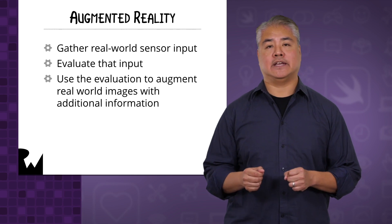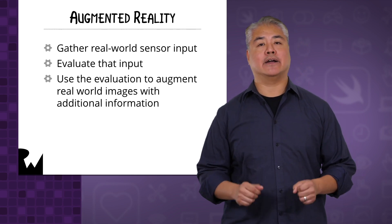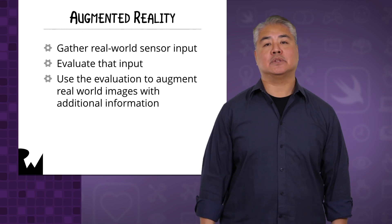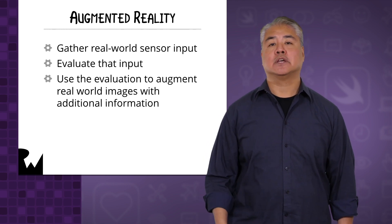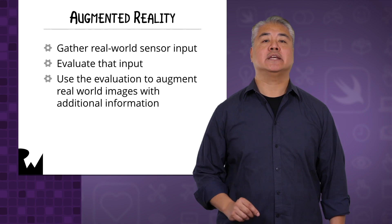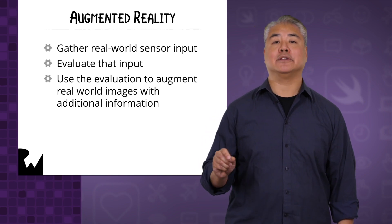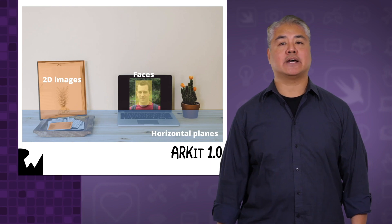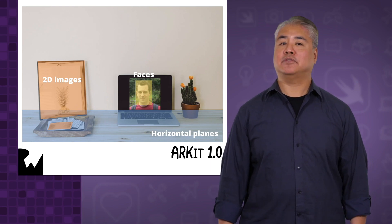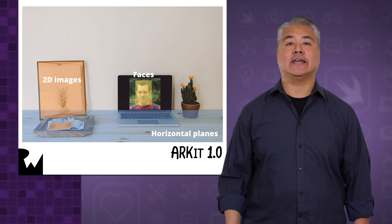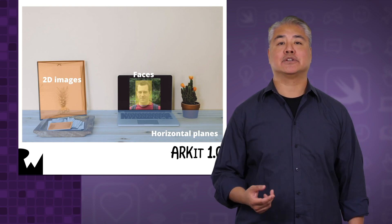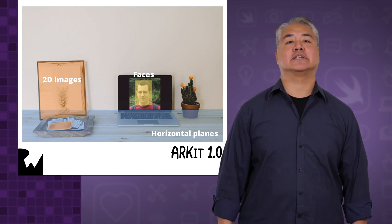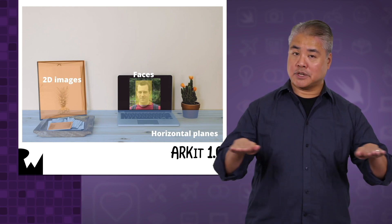This course covers ARKit 2.0, which comes with iOS 12 and is the framework's third release. Each release added a new suite of features, but each brought one big new thing to ARKit. ARKit 1.0 was introduced with iOS 11 and brought basic features: being able to draw virtual images over real-world ones, and being able to detect real-world horizontal planes.